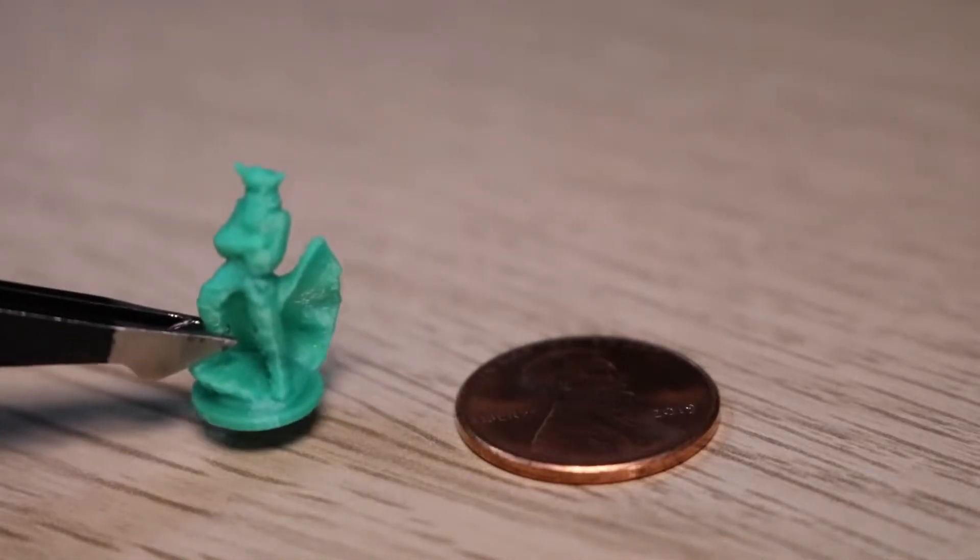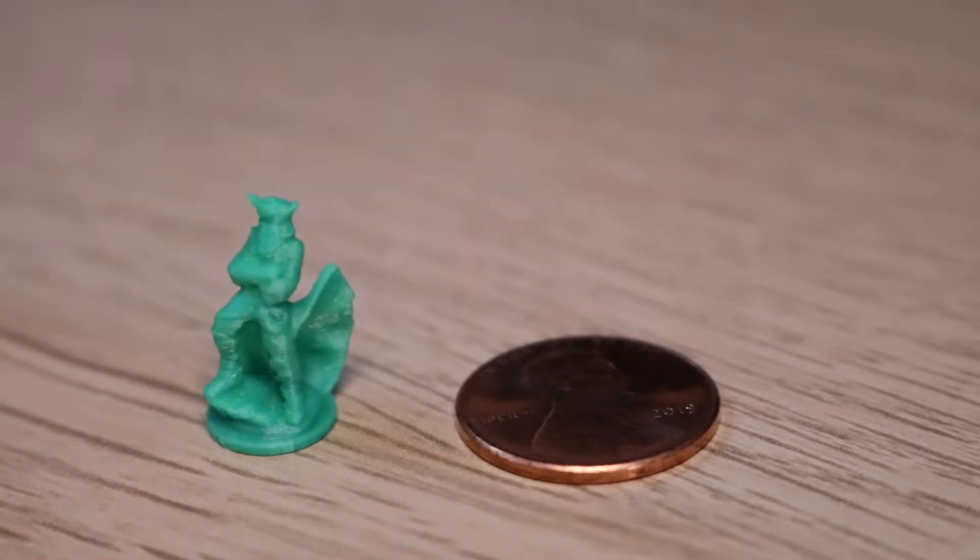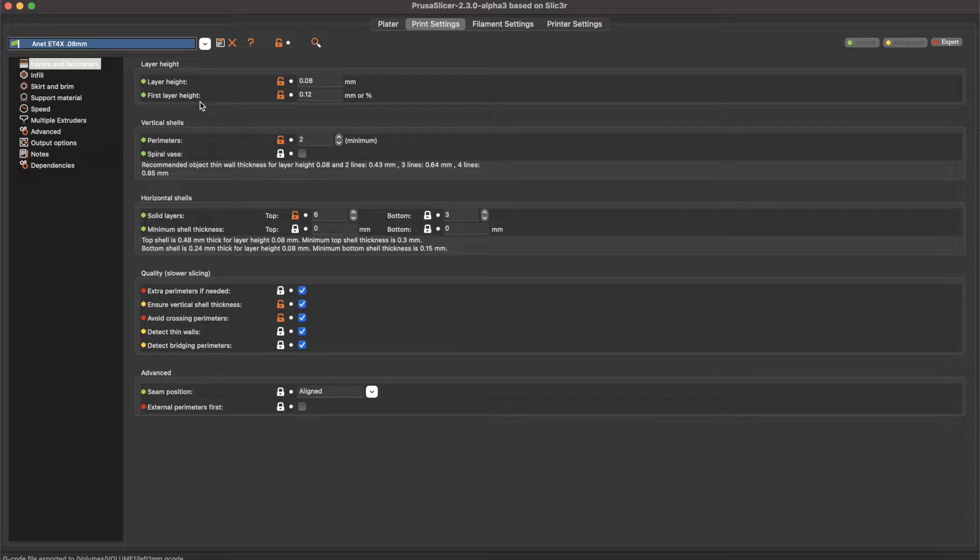I was really impressed with the level of detail I was able to achieve, and in this video I'm going to walk you through some of the settings I used to get there. Just like in my previous video, I'm using PrusaSlicer to do all of the slicing for this printer. In addition to changing the nozzle diameter value in PrusaSlicer, I created this custom 0.08mm profile that uses a 0.12mm first layer.